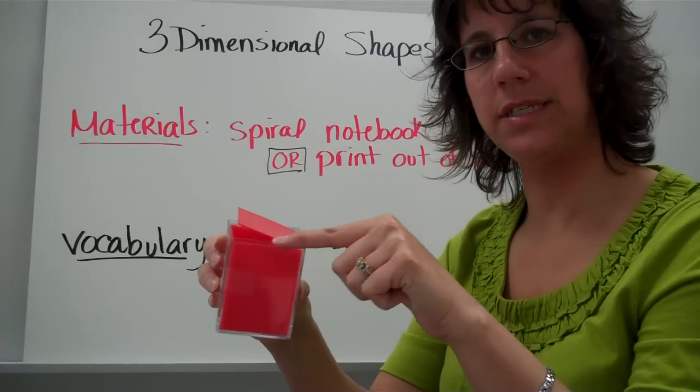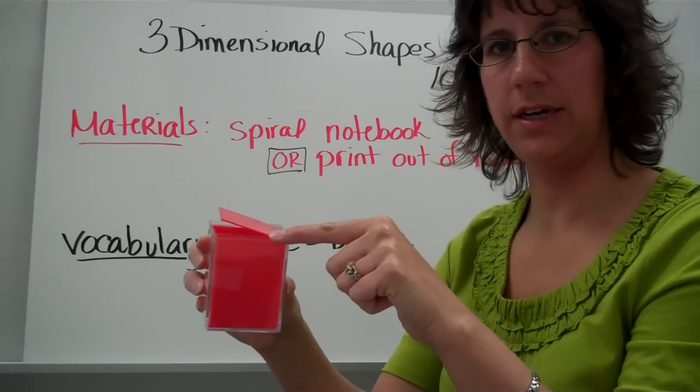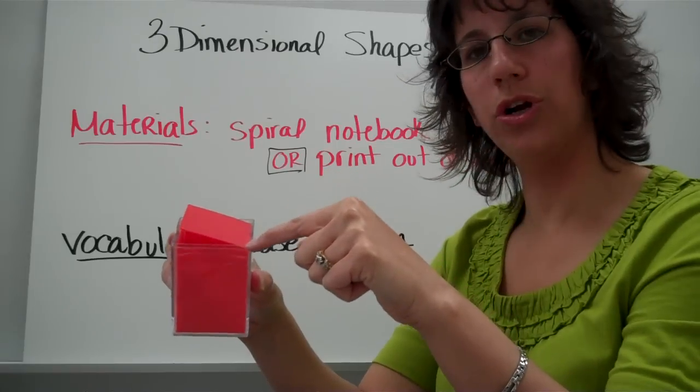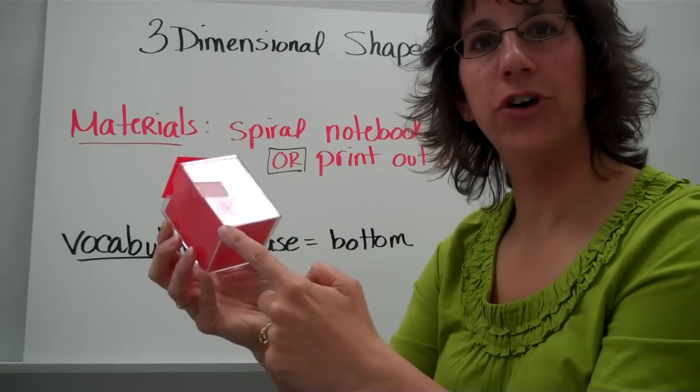These are edges, edges where those two faces intersect. The corners are called vertices. That's the plural. Singular would be vertex.